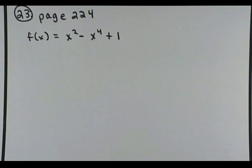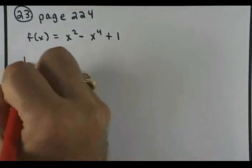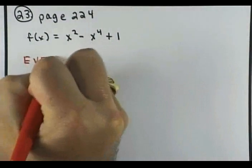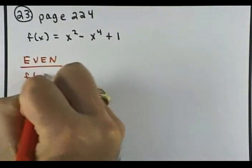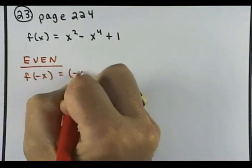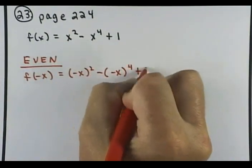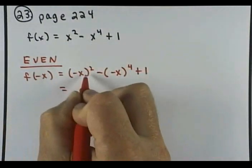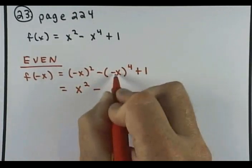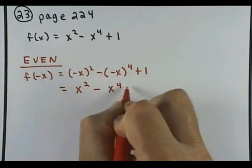So to test for even, what I've got to do is come in and plug in what? F of negative x. Very good. I'm going to do f of negative x. So when you raise a negative to an even power, what's it become? When you raise a negative to an even power, what's it become?